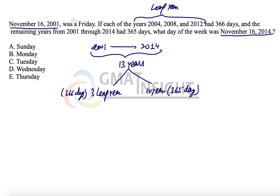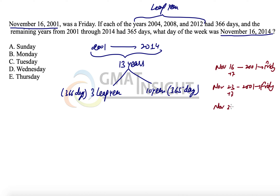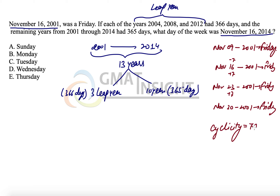How do we move through 13 years? We need to understand one very basic calculation: if we move in a calendar by 7 days ahead or 7 days behind, then the day does not change. For example, on November 16, 2001, if the day is Friday, then moving 7 days ahead to November 23, 2001, the day would still be Friday. Similarly, November 30, 2001 would still be Friday, and November 9, 2001 would still be Friday. The cyclicity of day in a calendar is equal to 7 days.